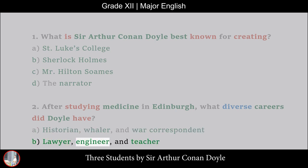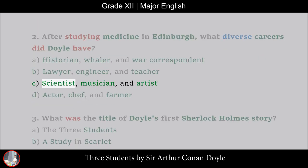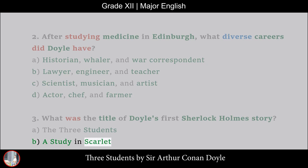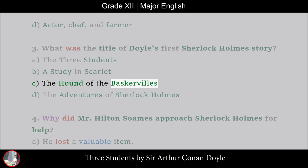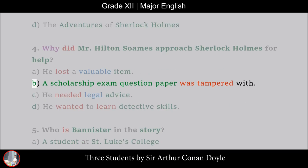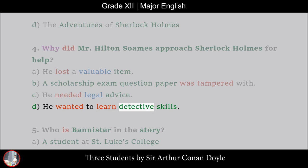3. What was the title of Doyle's first Sherlock Holmes story? A. The Three Students, B. A Study in Scarlet, C. The Hound of the Baskervilles, D. The Adventures of Sherlock Holmes. 4. Why did Mr. Hilton Soames approach Sherlock Holmes for help? A. He lost a valuable item, B. A scholarship exam question paper was tampered with, C. He needed legal advice, D. He wanted to learn detective skills. 5. Who is Bannister in the story? A. A student at St. Luke's College, B. The Narrator's Friend, C. A servant at St. Luke's College, D. A police officer.